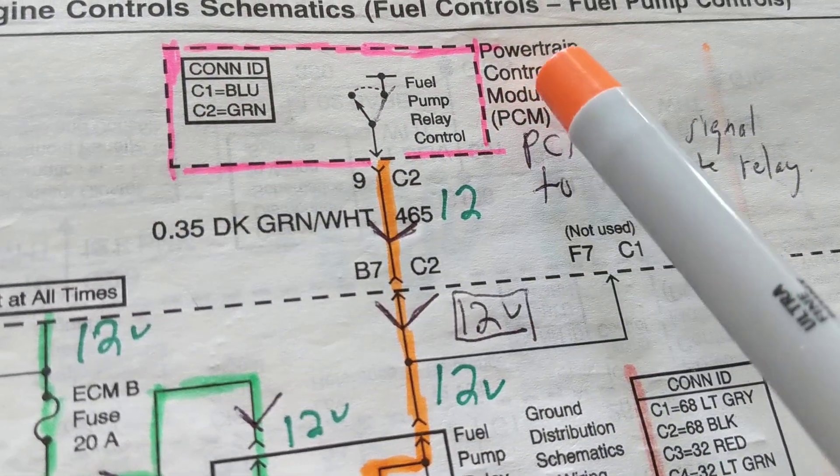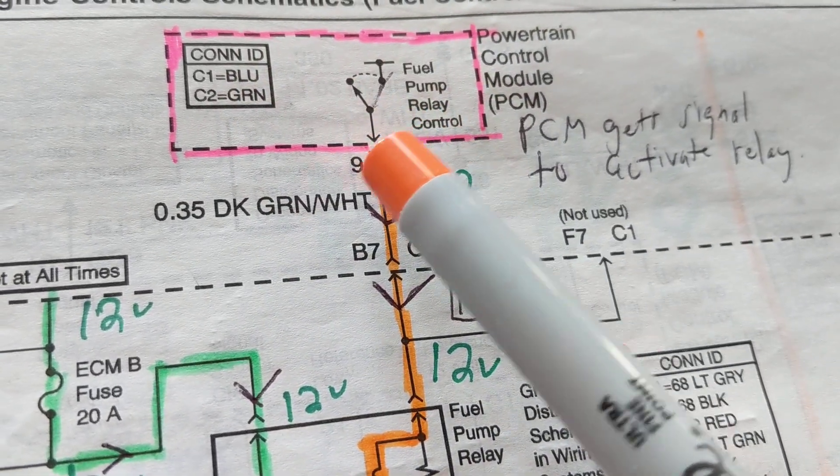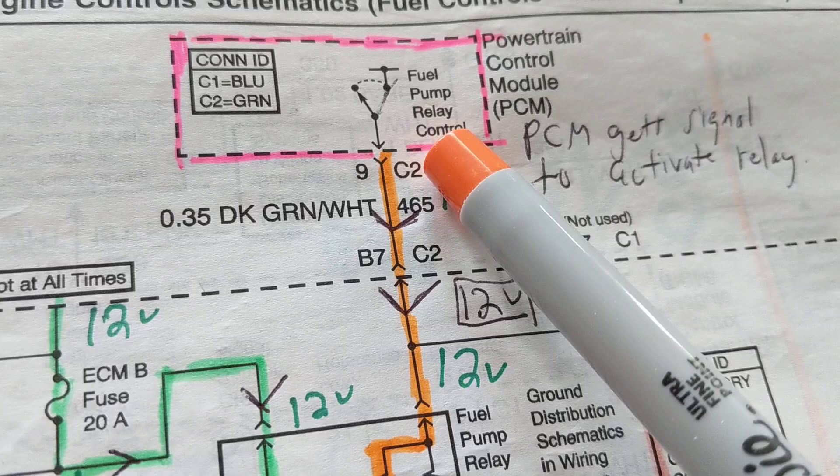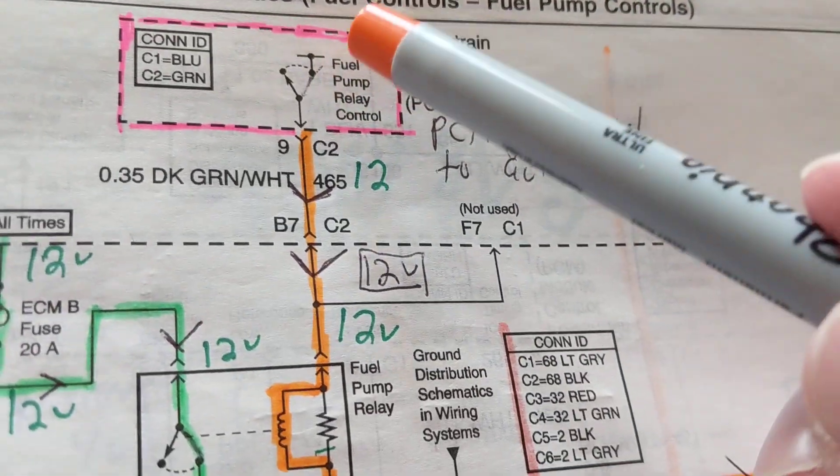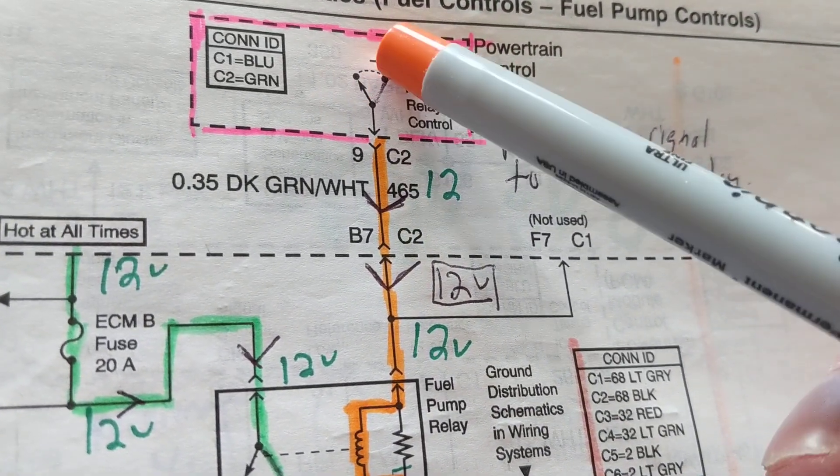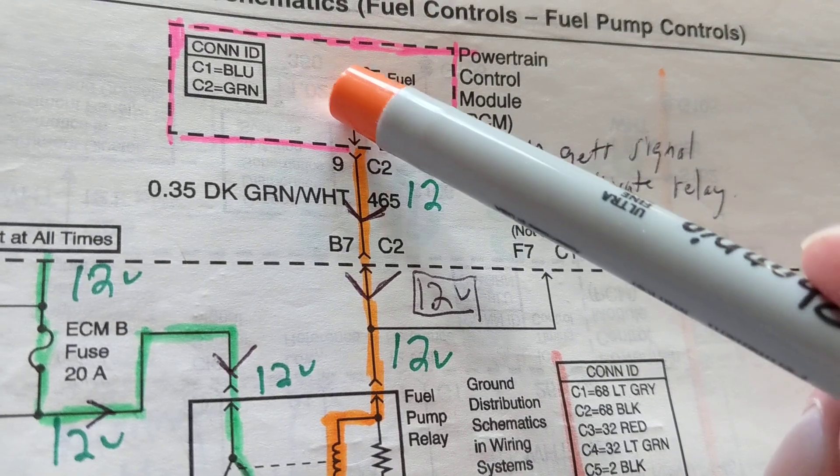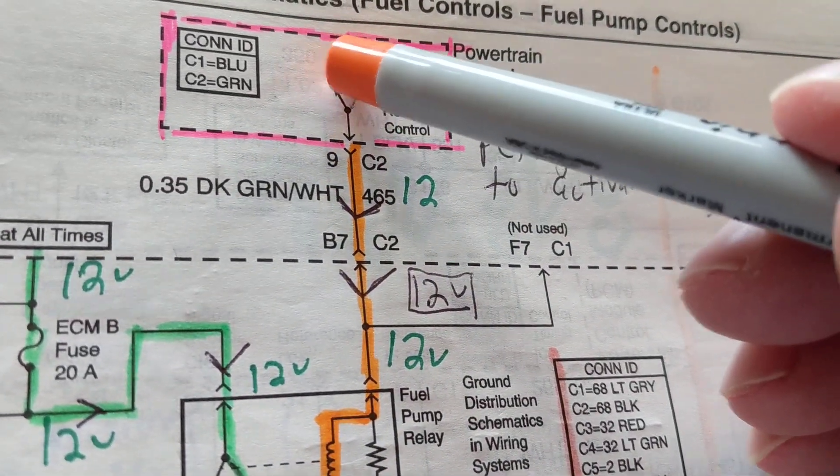C2 tells us that this connector over here, which is pin 9, is a green connector. This is controlled by the computer. When does the computer decide to close this? This position is in the rest position, it's in the open position. We need the switch to be flipped.